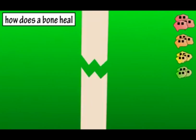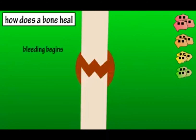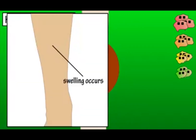Let's say a bone breaks — we're going to assume it's well aligned. When the bone breaks, so do the blood vessels running down the bone. The first thing that's going to happen is bleeding, which will lead to a blood clot being formed. The area will also swell up.